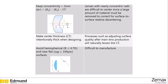You should keep the concentricity above 2 millimeters. Lenses with nearly concentric radii are difficult to center since a large amount of material must be removed to correct for surface-to-surface relative decentering. You should also keep the center thickness of a lens intentionally thick when designing, as processes such as adjusting surface quality after main lens production will naturally lessen the center thickness. You should also avoid hemispherical lenses — that is, nearly round ones — as well as nearly flat lens surfaces, as they're difficult to manufacture and hard to align.